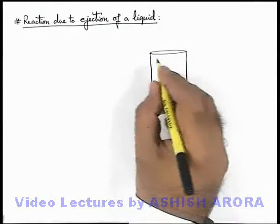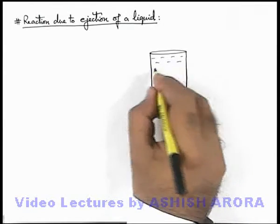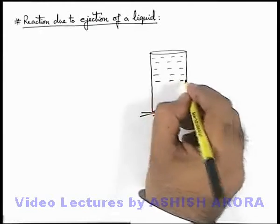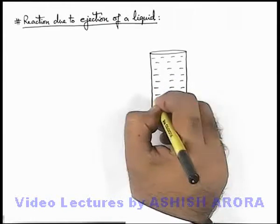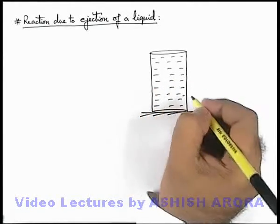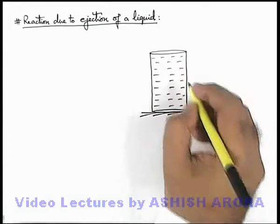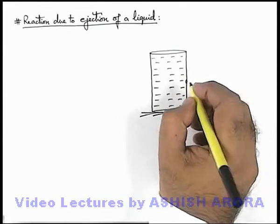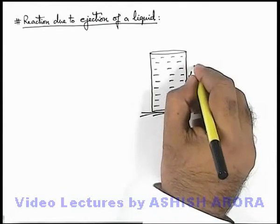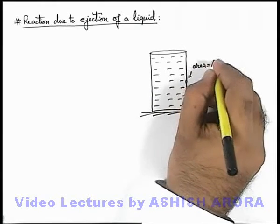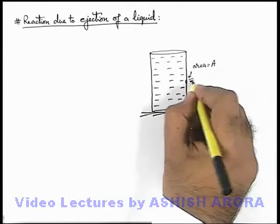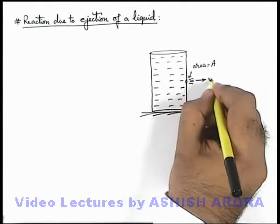In this cylindrical container, a liquid is filled. At any point in the side walls of this cylindrical container, if we make a hole with cross-sectional area A, then fluid will start ejecting out with the efflux velocity v.